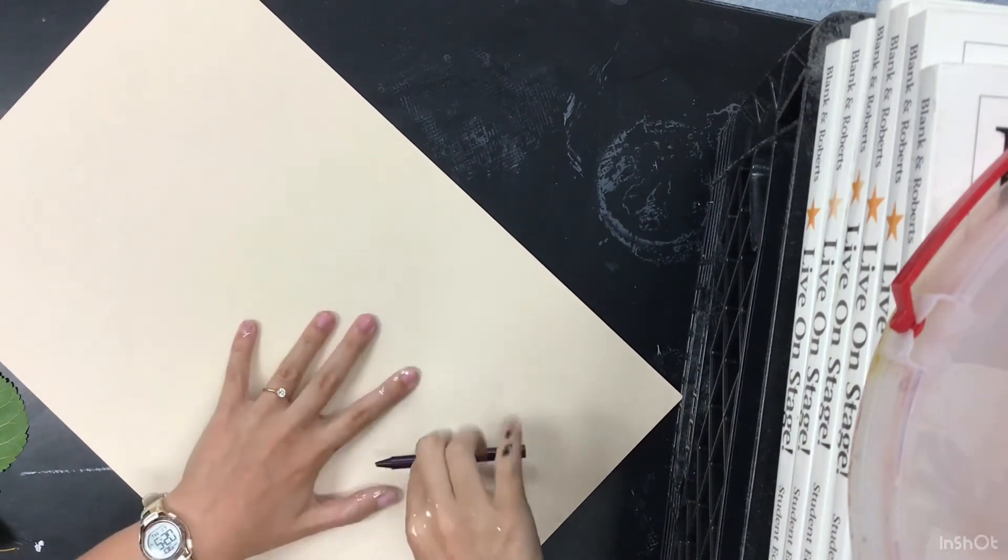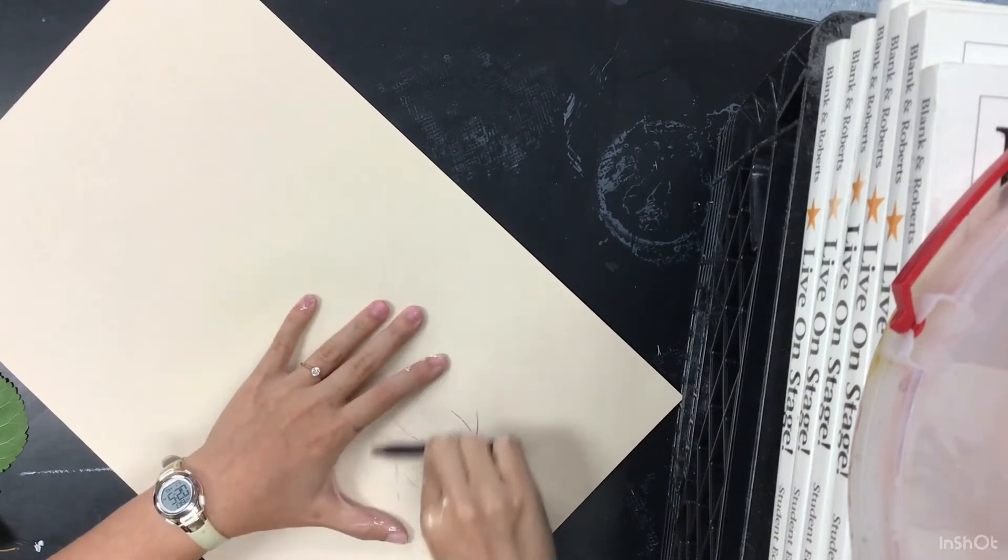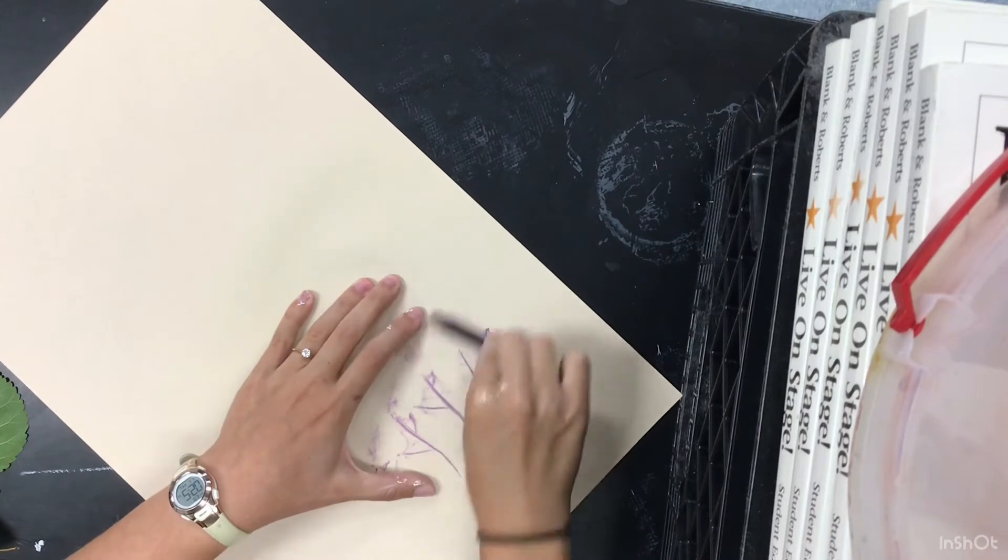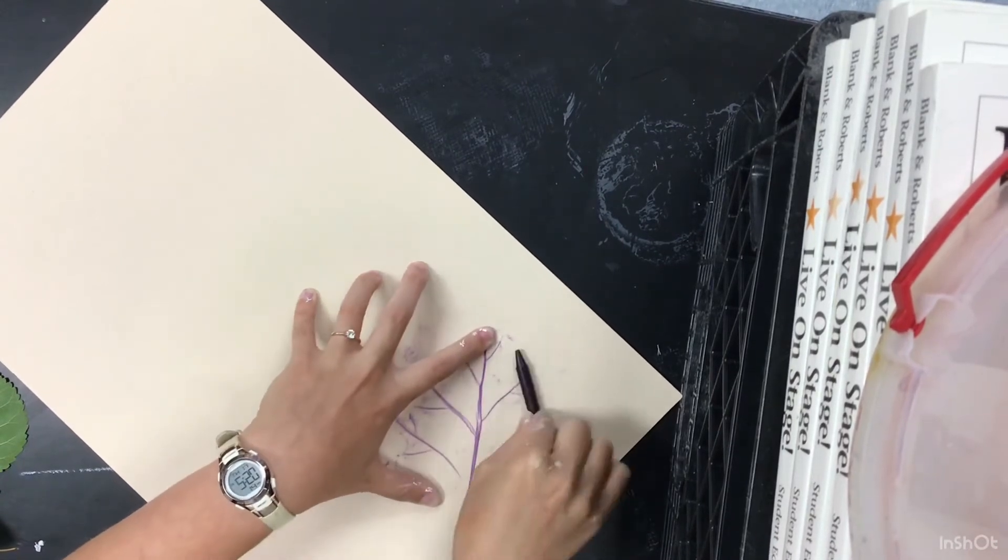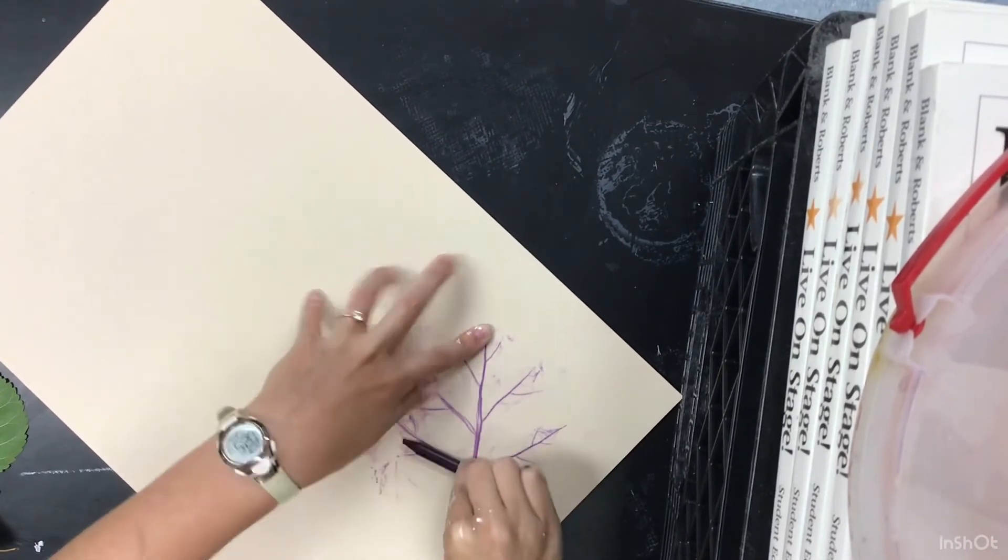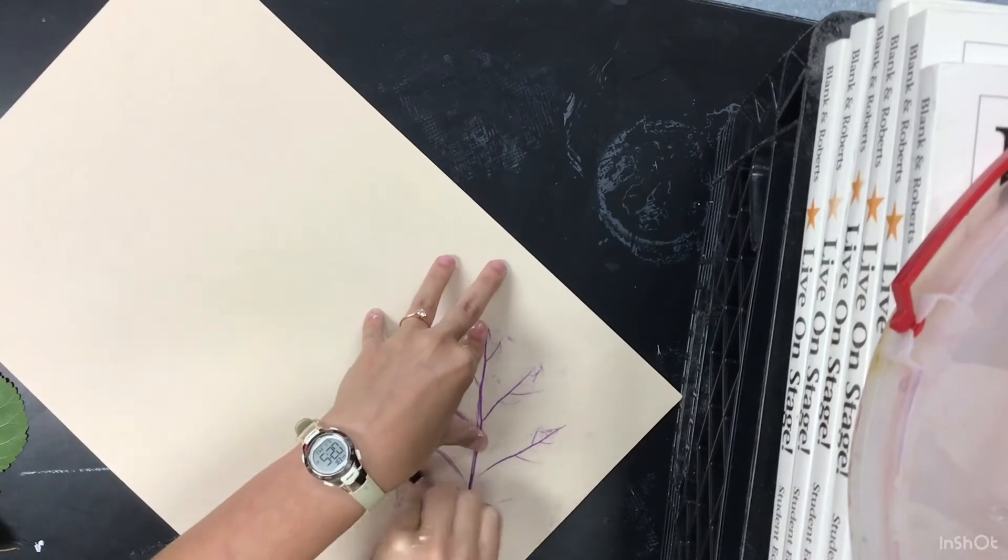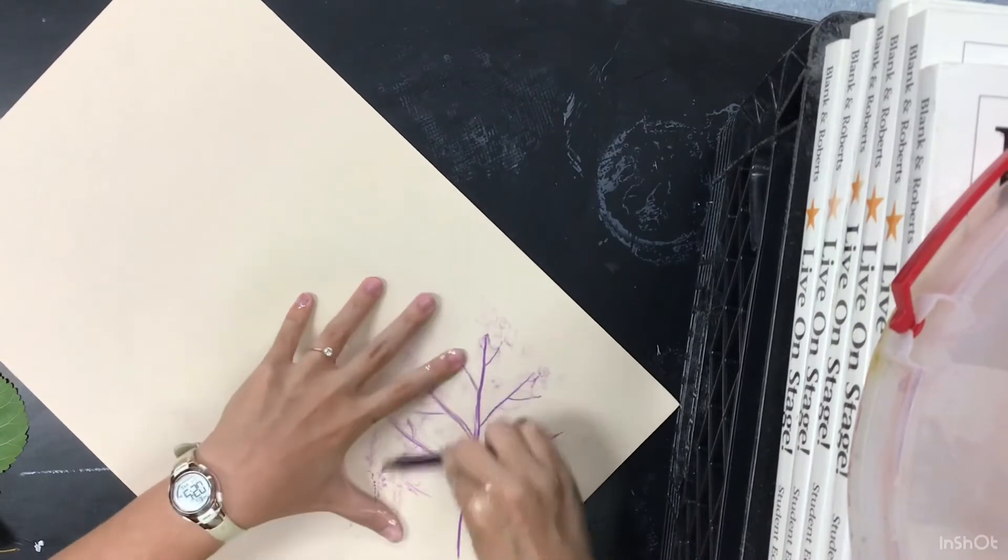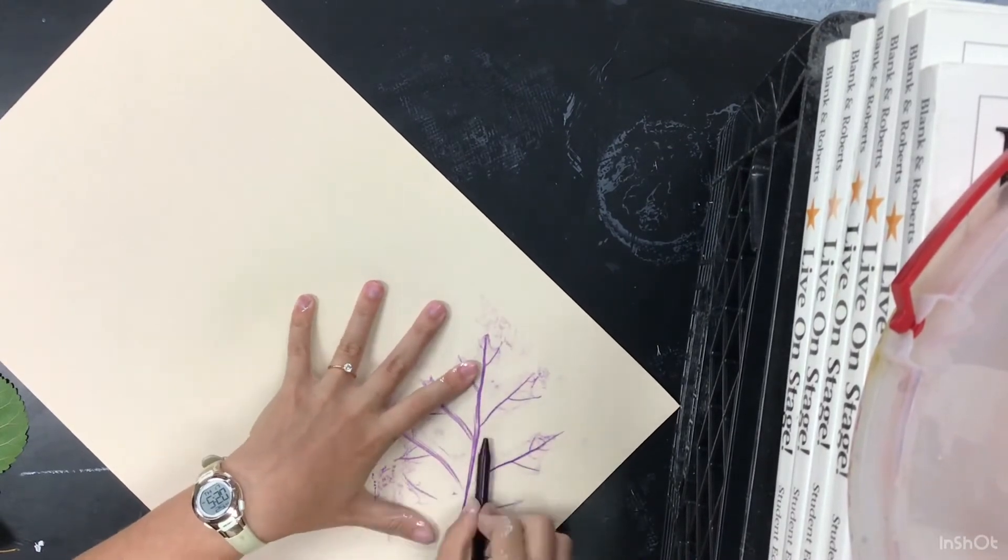Find my leaf. As I rub my crayon back and forth, I'm also pushing down. Where my leaf is is where my color shows the darkest. It's like I'm coloring with the side of my crayon to help this happen.